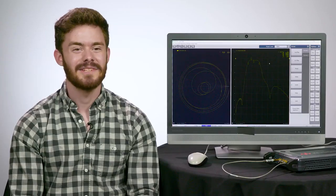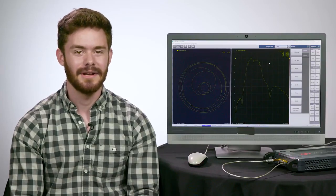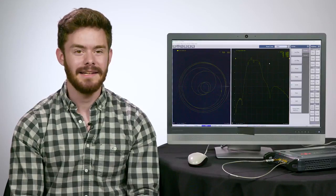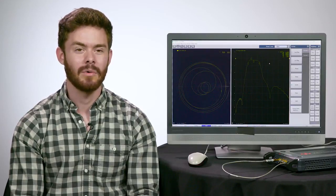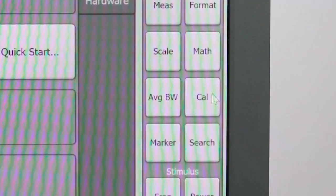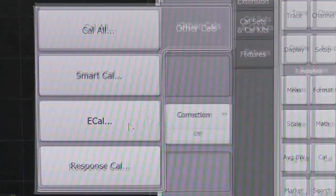The E-cal module is used for this calibration to remove system errors like the effect of test cables. Wait until the LED of the E-cal module turns green, indicating that it has warmed up enough in order to correctly calibrate. Once the module is connected, start the calibration by going to the CAL menu, selecting Other CALs, and E-cal.